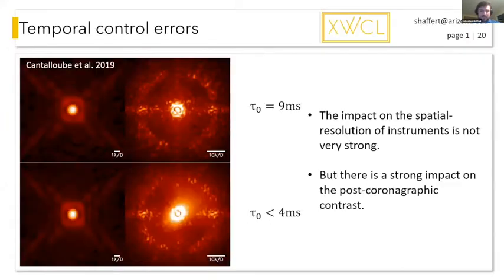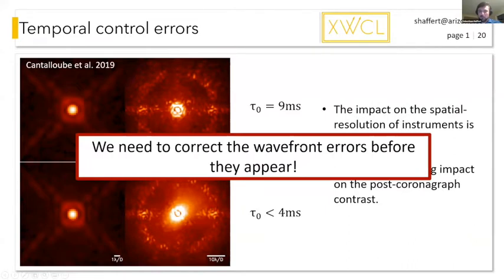One of the challenges, as yesterday was also discussed, is the temporal control error in an AO system. It's not really a super strong noise source for normal imaging where you see the normal PSF. You can see here the difference between two situations, one with a very long atmospheric coherence time and one with a short coherence time. The PSF itself is not really severely impacted by the coherence time. But if we look at the post-coronographic PSF, we can actually see that there's a substantial difference between the two. With a short coherence time, you can see the wind-driven halo coming up and adding additional noise in the dark zone where we want to search for planets.